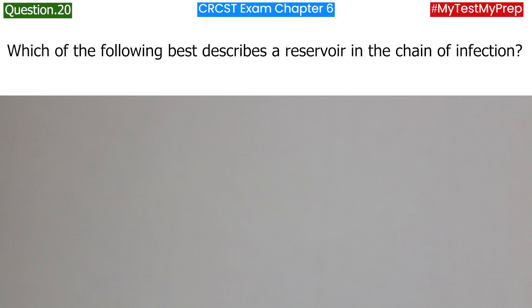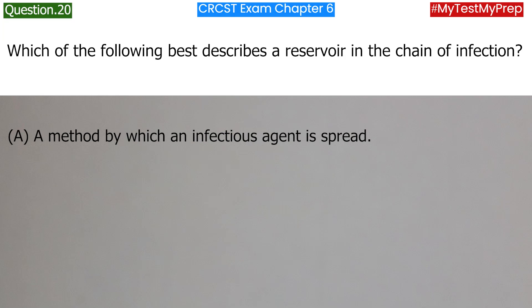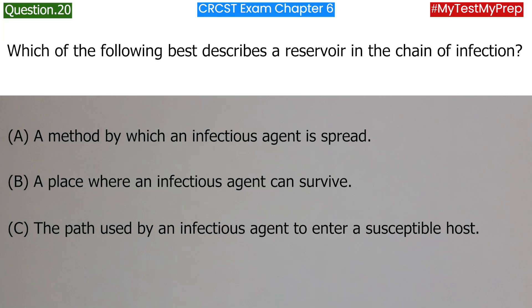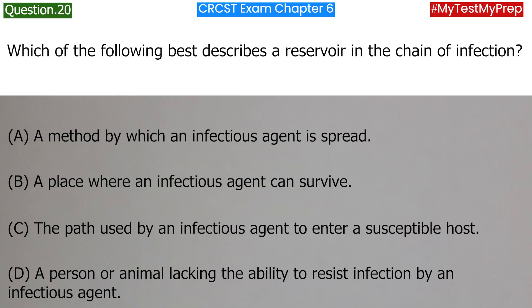Which of the following best describes a reservoir in the chain of infection? A. A method by which an infectious agent is spread. B. A place where an infectious agent can survive. C. The path used by an infectious agent to enter a susceptible host. D. A person or animal lacking the ability to resist infection by an infectious agent. Answer: B. A place where an infectious agent can survive.